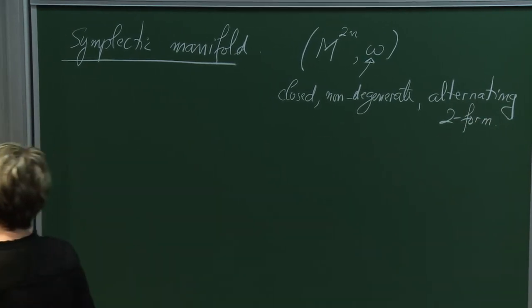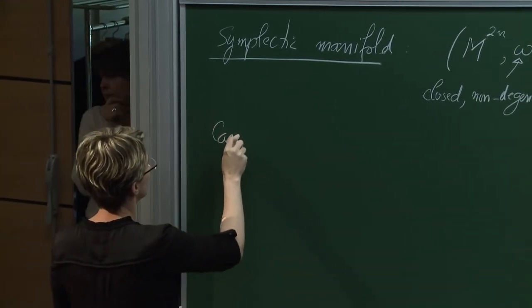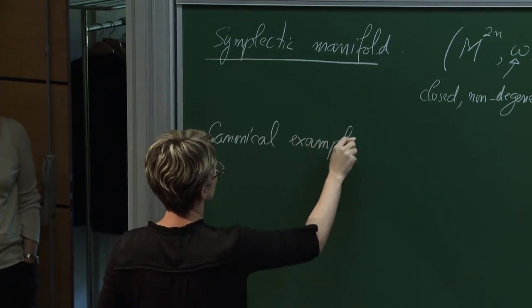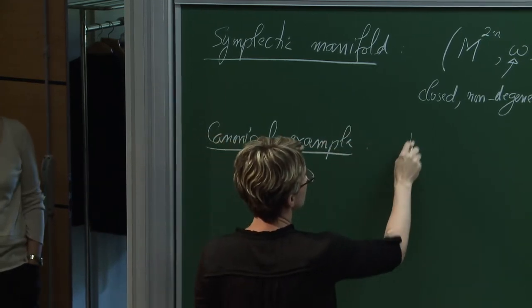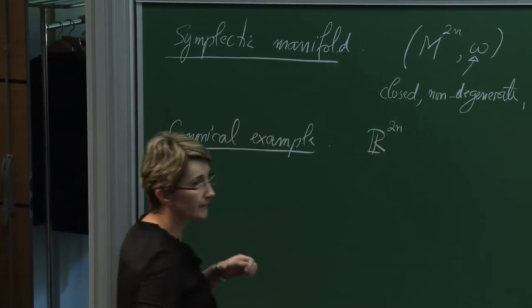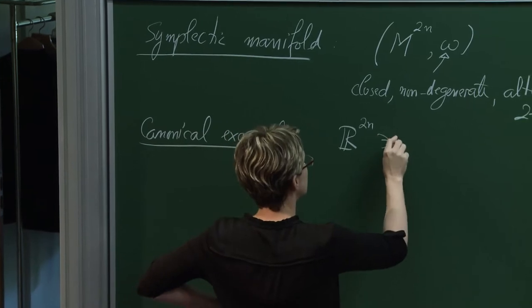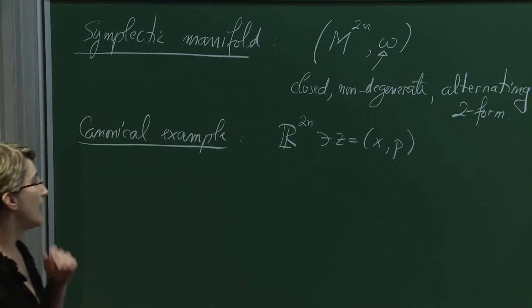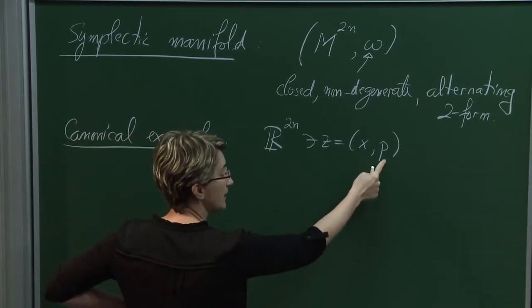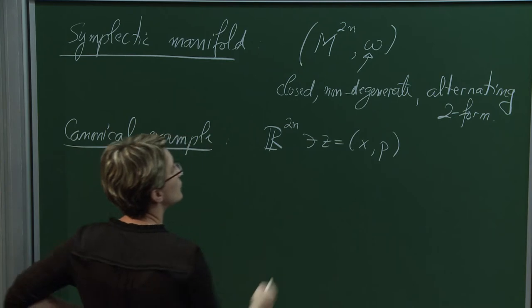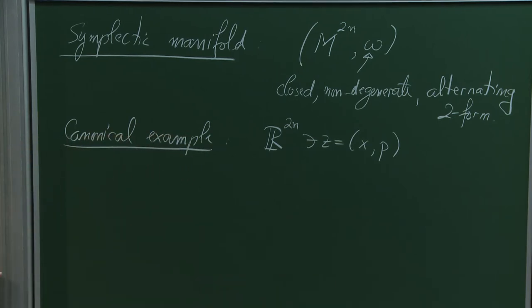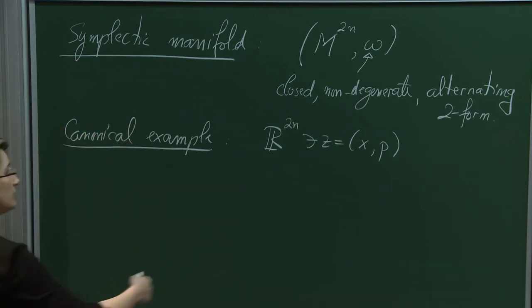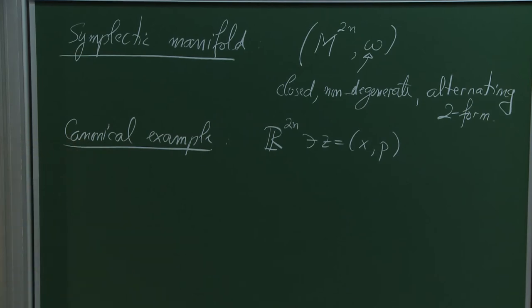The canonical example of a symplectic manifold is R^{2n}. A point z in here we write as (x, p), where both x and p are elements of R^n. We view x as the positions of n particles in R, and p as the momenta of those particles, or equivalently the position and momentum of a single particle in R^n.